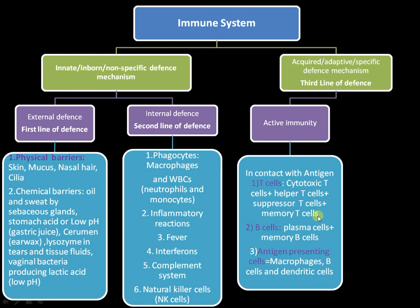Suppressor T-cells act when immune activity becomes heightened, while memory T-cells are involved in secondary immune response — a key characteristic of active immunity. B-cells are the cells involved in antibody production. Upon binding with an antigen, B-cells proliferate and form plasma cells and memory cells. Plasma cells are responsible for antibody production, and memory B-cells are responsible for secondary immune response.